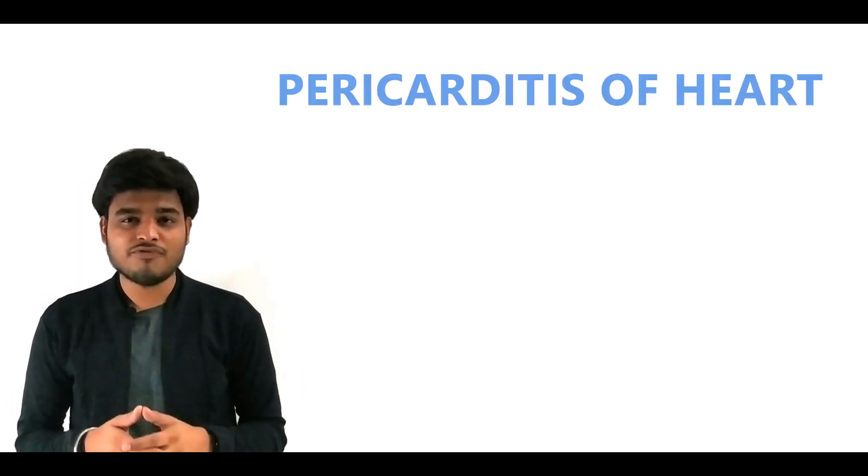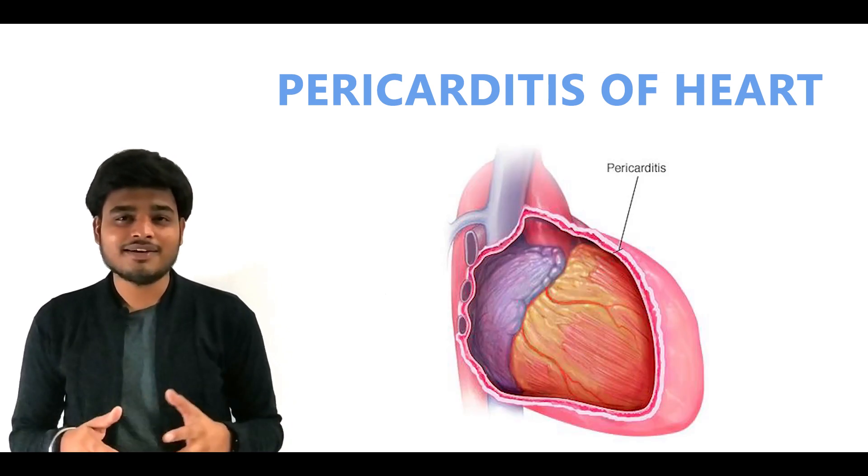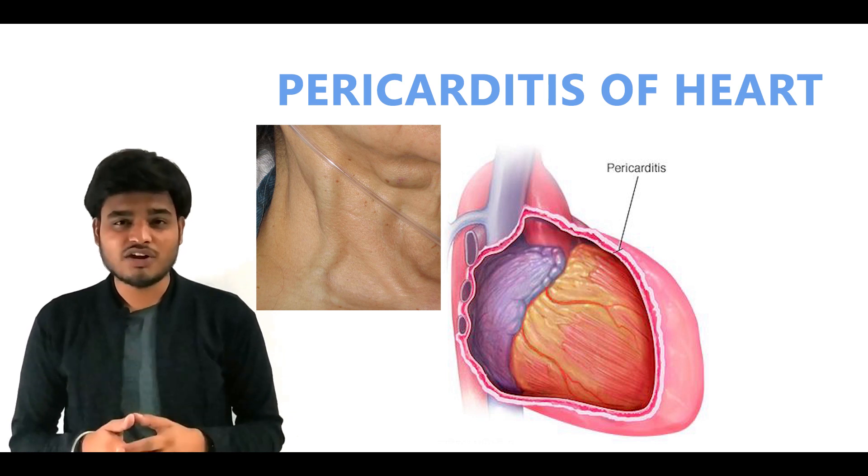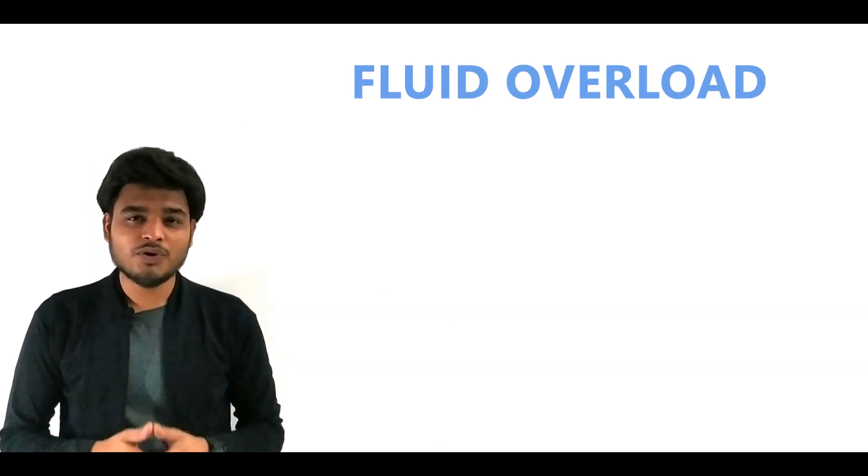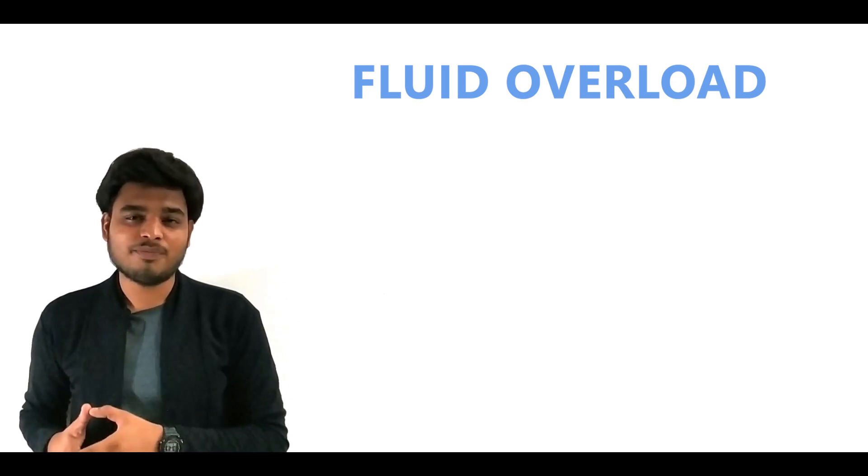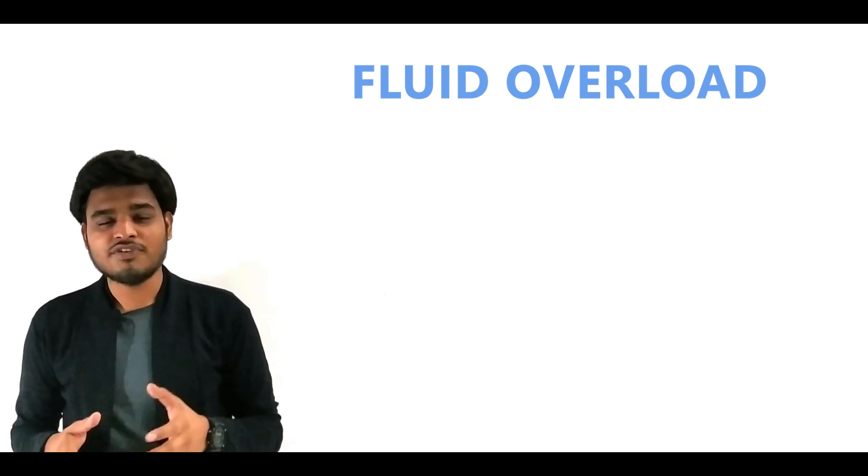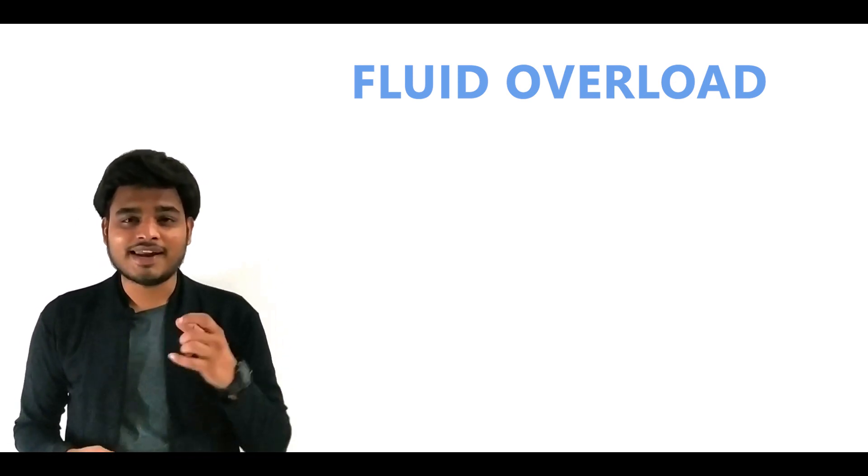Number four: pericarditis of the heart, in which the outer pericardium loses its normal elasticity and becomes rigid in nature, which contributes to elevation in jugular venous pressure. Number five: fluid overload. Fluid overload increases right-sided heart ventricular pressure. This will elevate jugular venous pressure and give enlargement of neck veins.